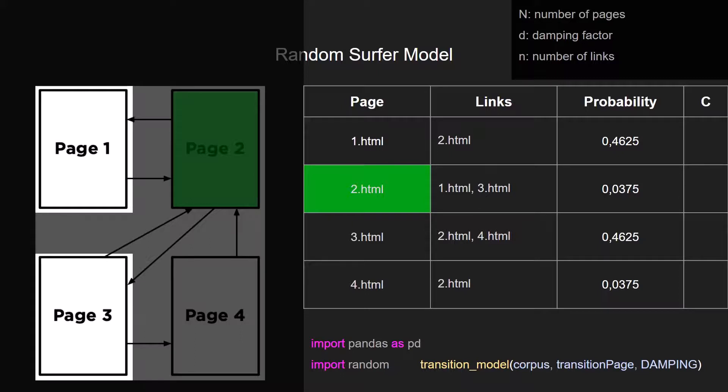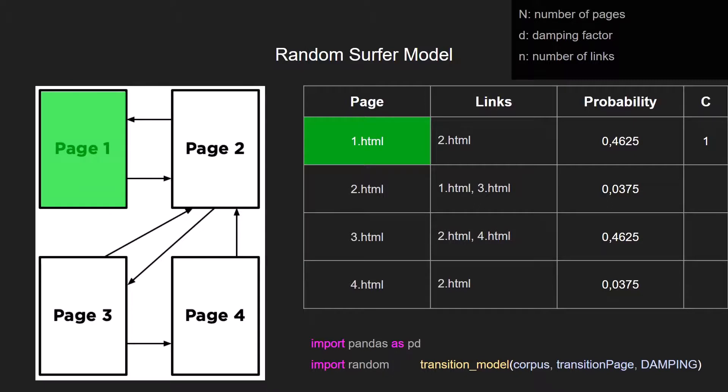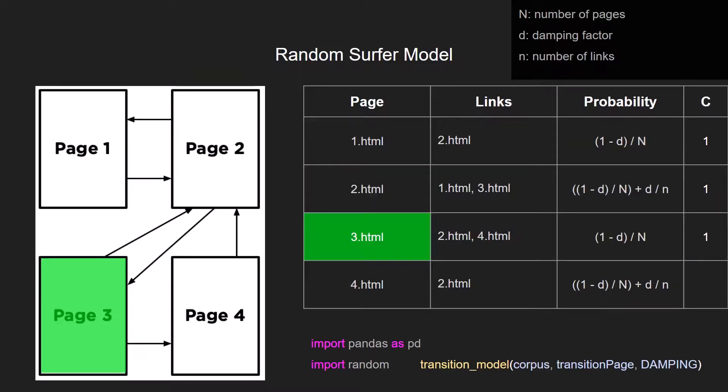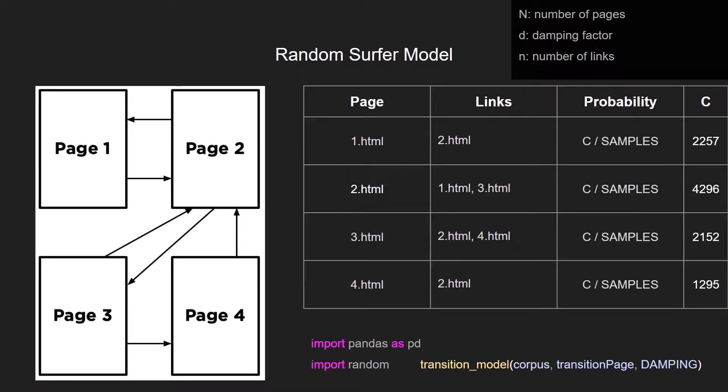As you can see, for this first iteration of the random surfer model, we will have this probability. But then we need to take into account the number of times that the web page was selected. So we increase the counter of this page because we randomly selected this, considering the probability. And we again recalculate depending on the links that that page has. So in this case it is only one link and we keep going, we select page number 2 and we increase the counter all over until we reach the amount of samples desired.